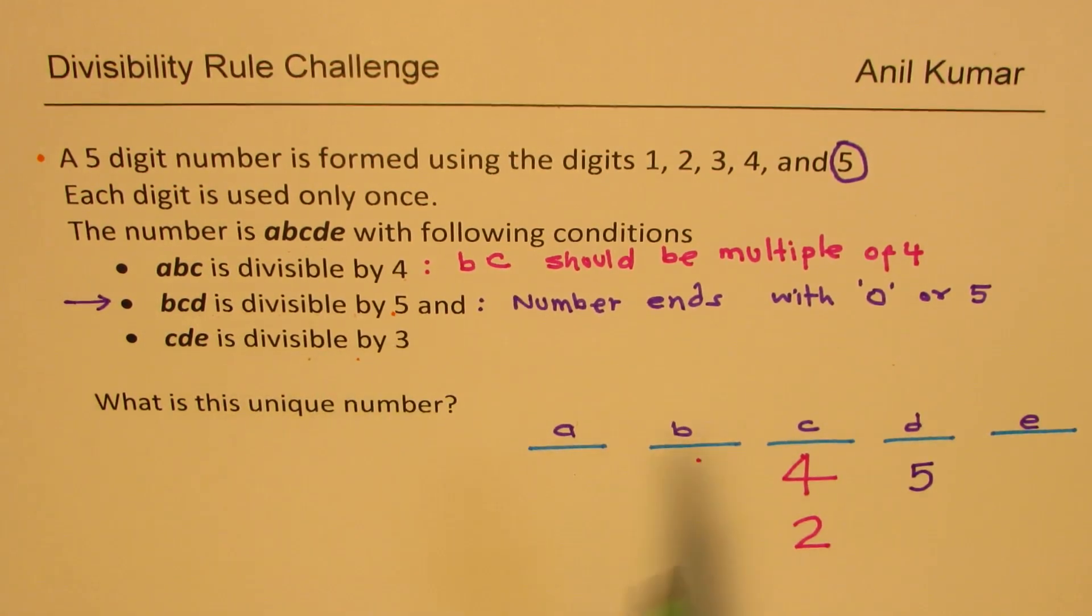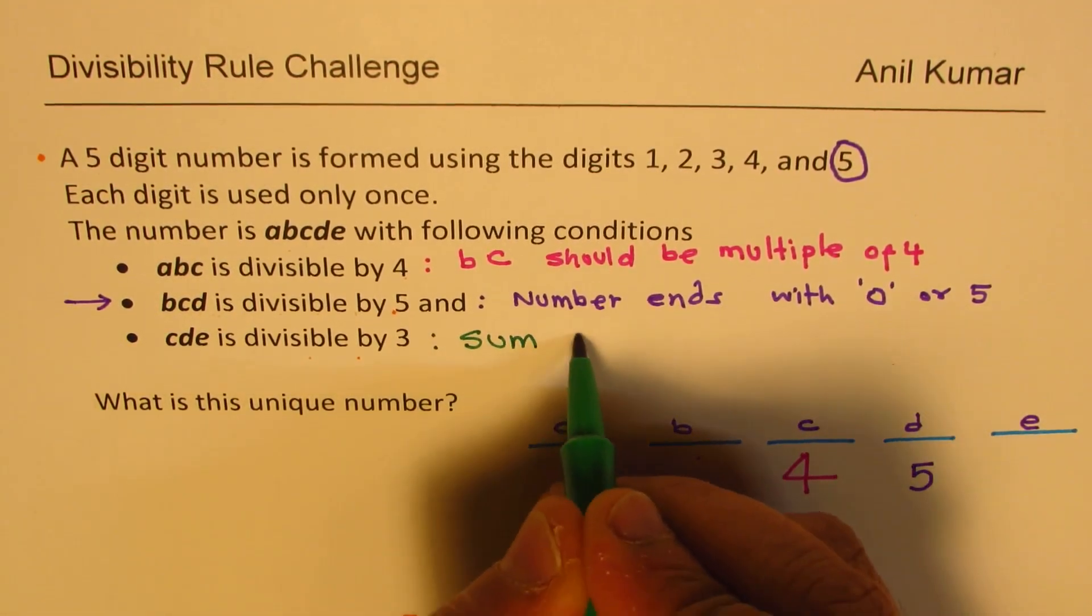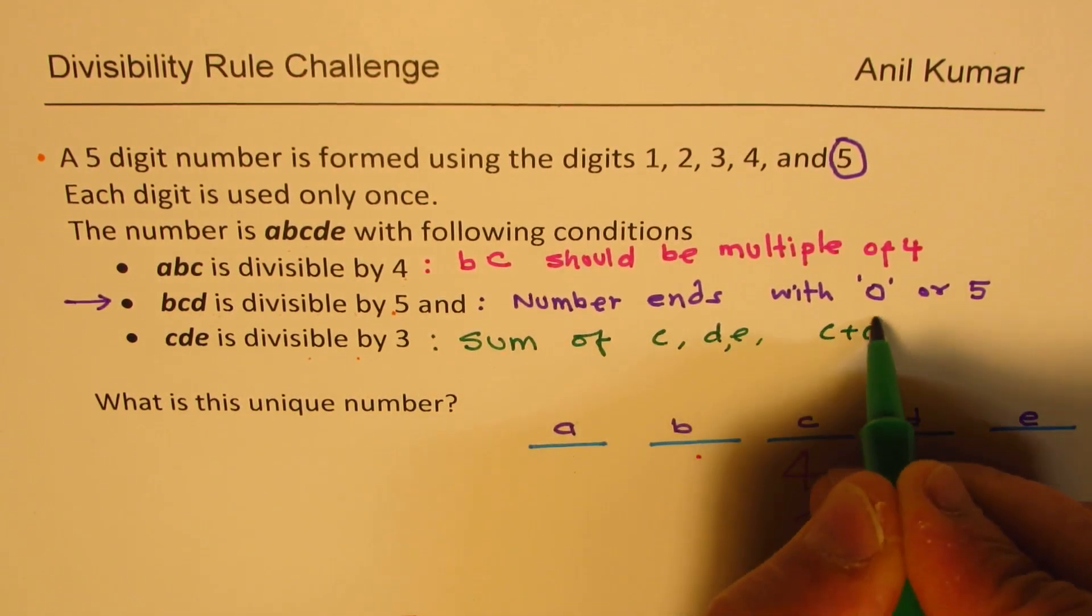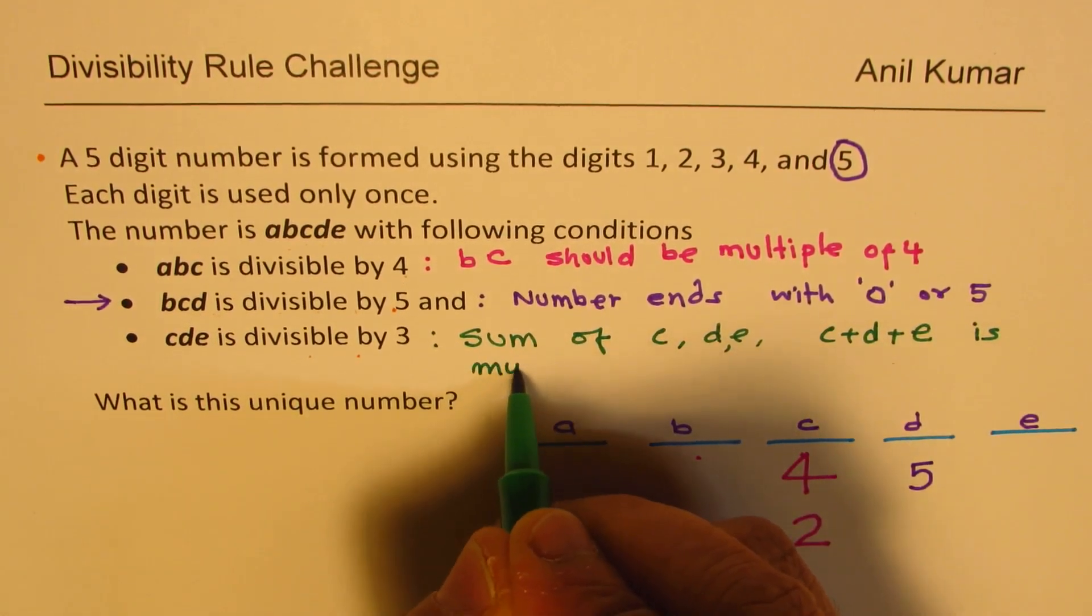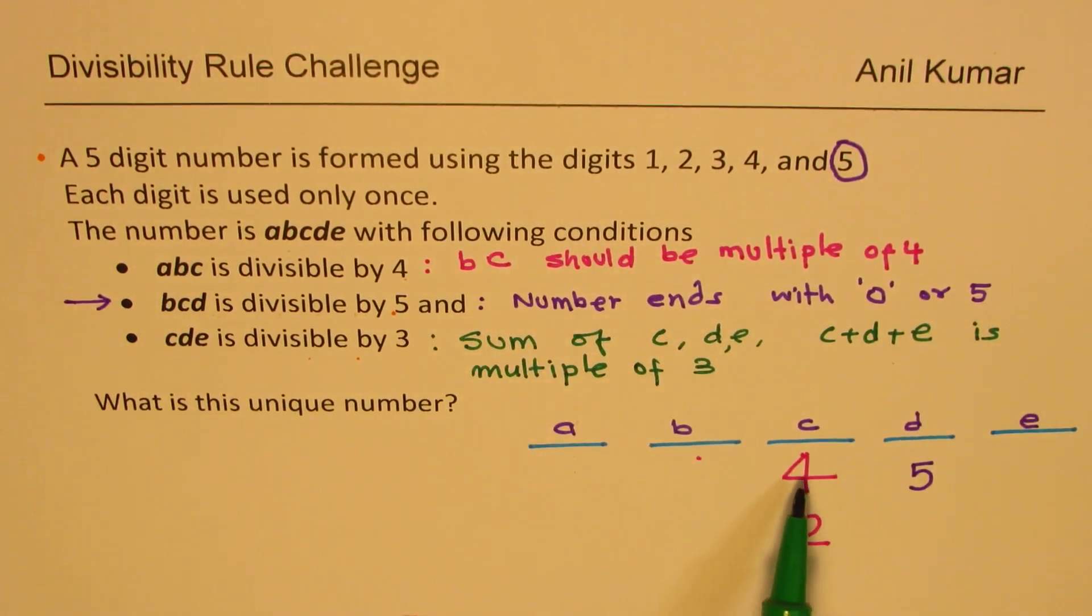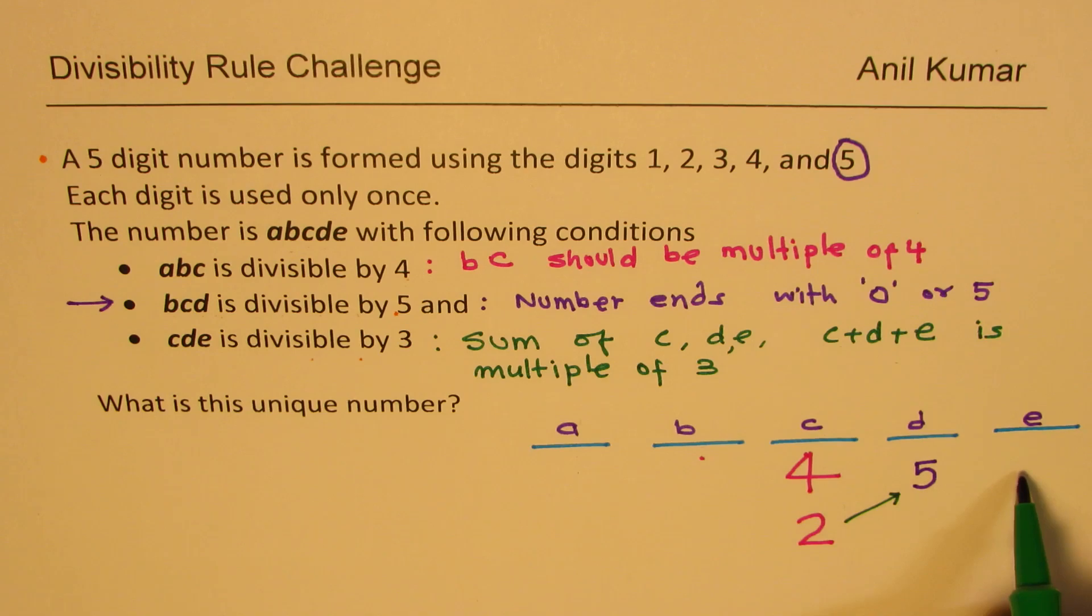Now let's take up the last condition, which is going to give us our answer. CDE is divisible by 3. What is the rule for this? Sum of C plus D plus E is multiple of 3. So let's add them. 4 plus 5 is 9. We could also use 2. Let's try with 2. 2 plus 5 is 7. What is the multiple of 3 more than 7? It is 9.